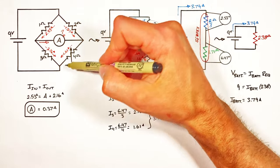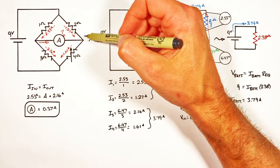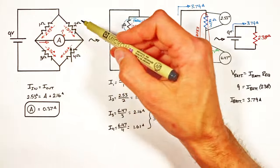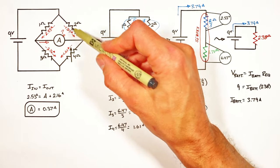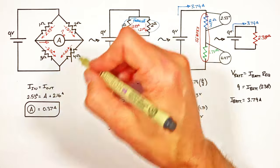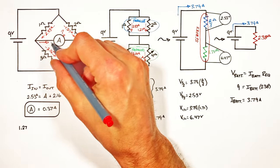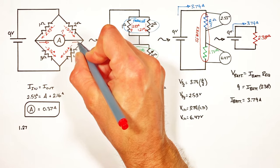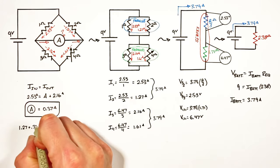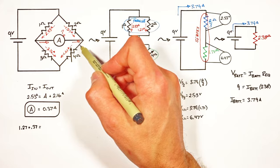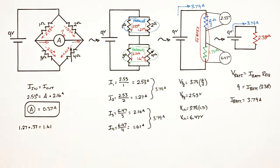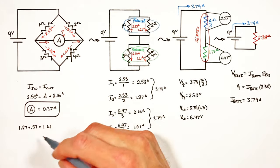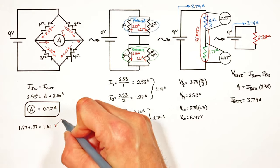We can check this result at the right-hand junction of the Wheatstone bridge. There, 1.27 amps coming in plus the ammeter current should equal the current through the 4 ohm resistor. This doesn't work out exactly perfect due to rounding throughout the calculation, but ultimately it checks out.